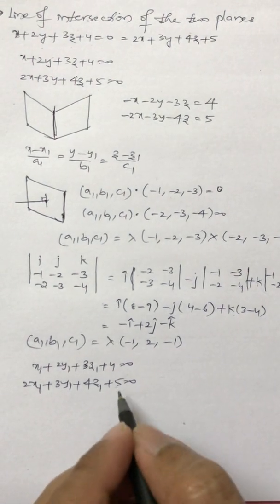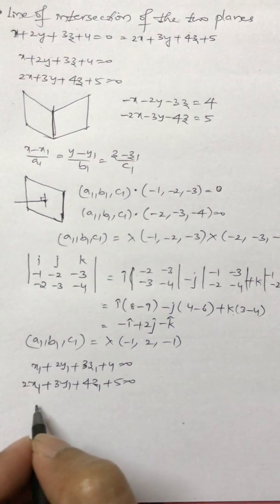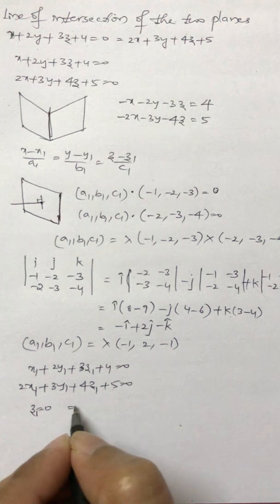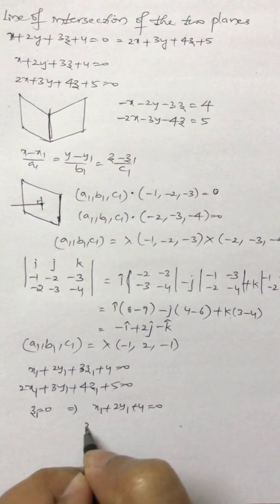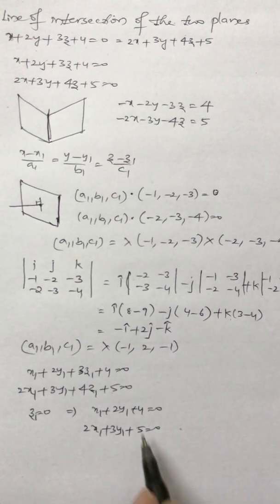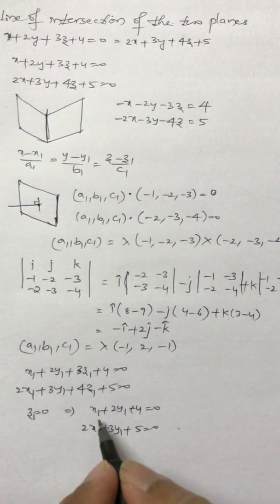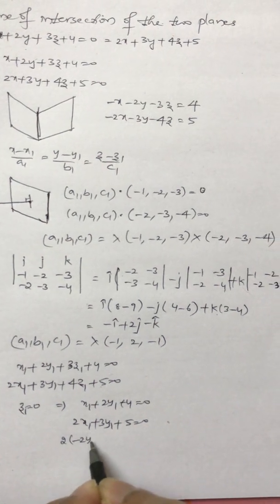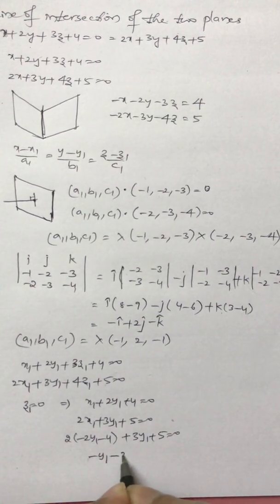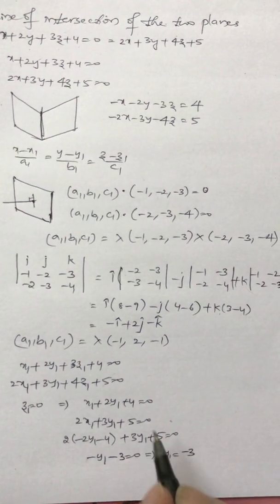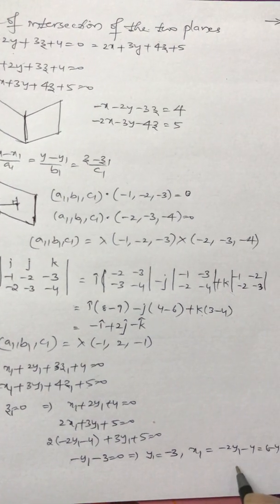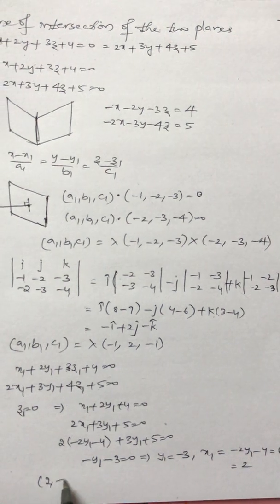We have two equations but three variables, so I will eliminate one variable by making z1 equal to 0. With z1 equal to 0, we get x1 plus 2y1 plus 4 equals 0, and 2x1 plus 3y1 plus 5 equals 0 — these two are not parallel, so we can solve. From the first equation, x1 equals minus 2y1 minus 4. Substituting: 2(minus 2y1 minus 4) plus 3y1 plus 5 equals 0, giving minus y1 minus 3 equals 0, so y1 equals minus 3. Then x1 equals 6 minus 4 equals 2. The point is (2, minus 3, 0).